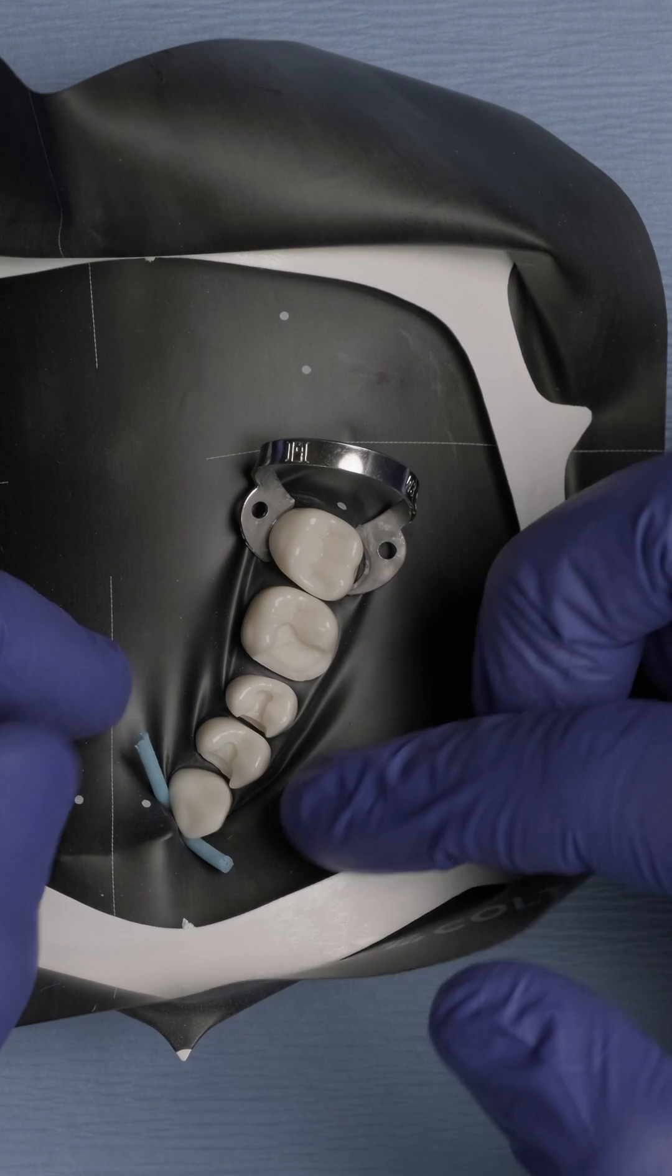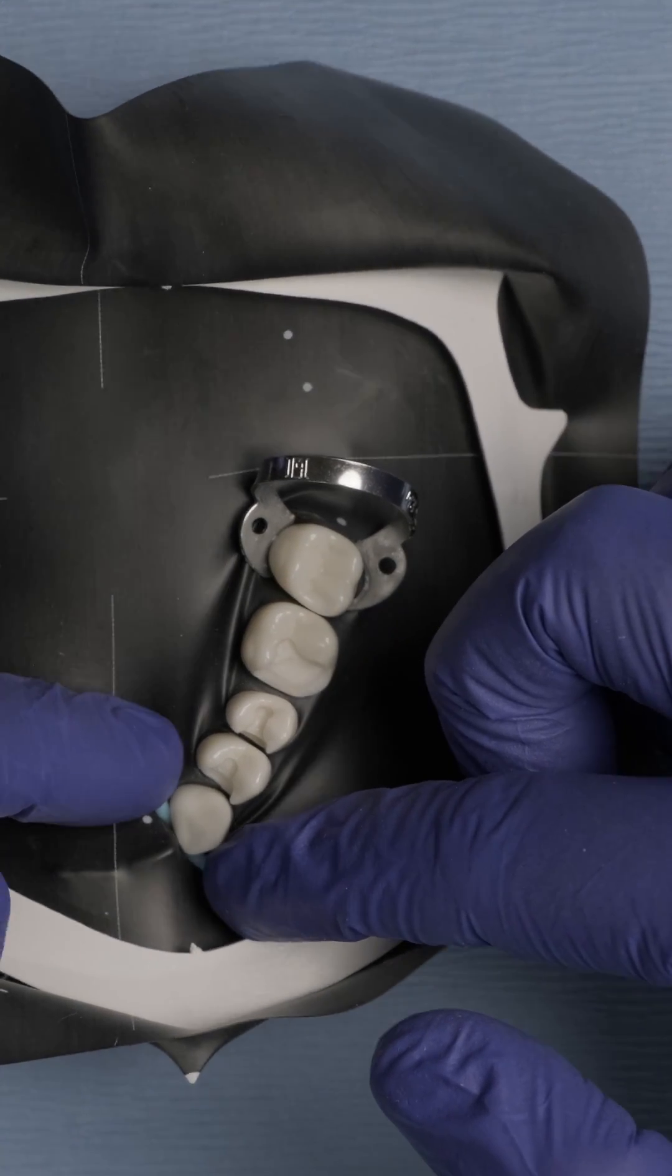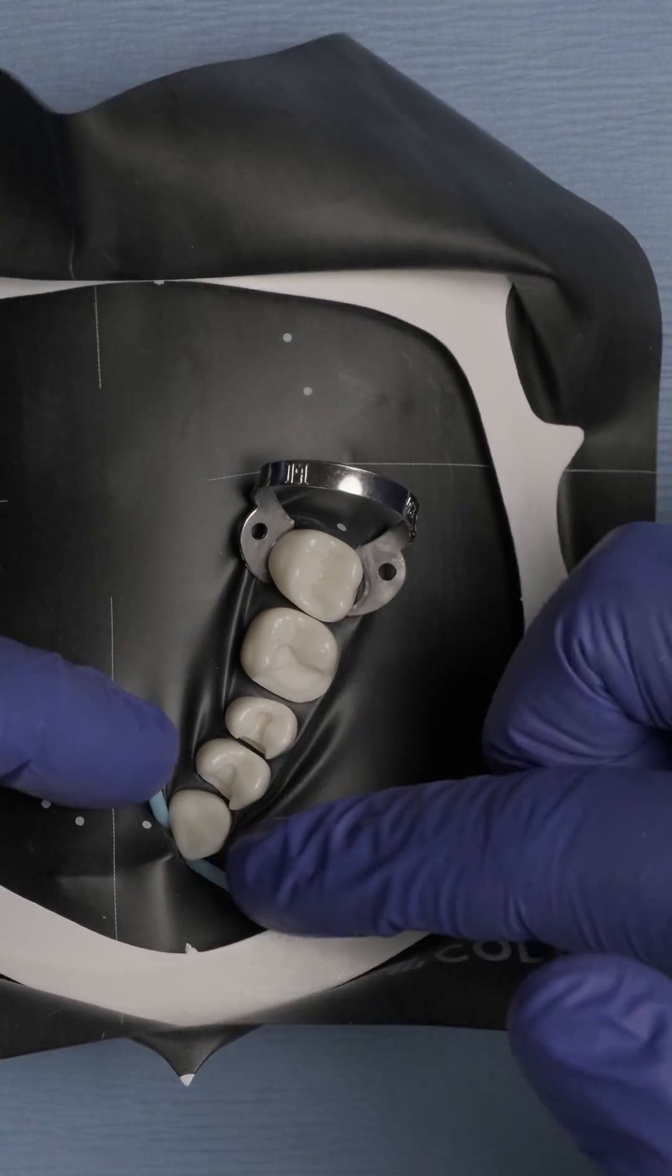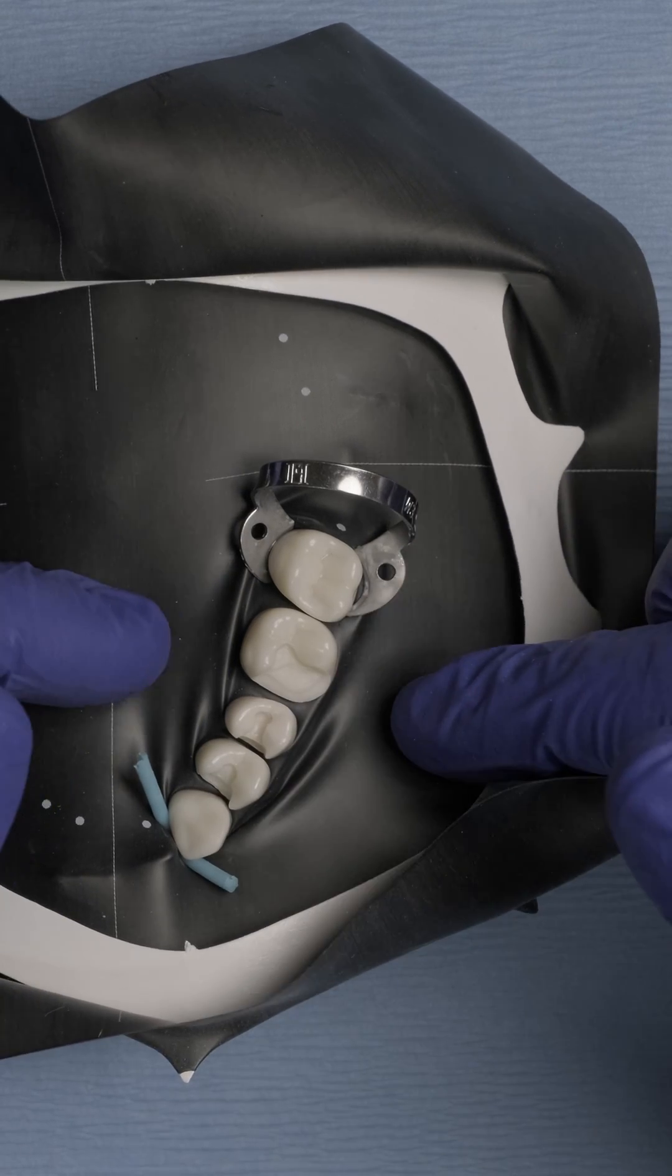This is going to keep the rubber dam in place. This and your retentive clamp. So always think about these two ways of securing or keeping your rubber dam in place.